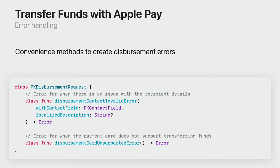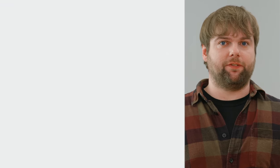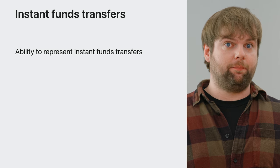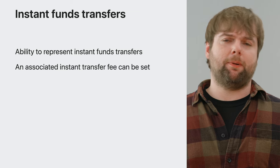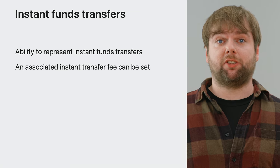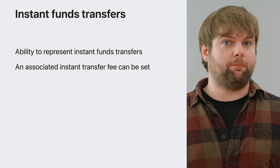If during the processing stage there are errors encountered, we have provided a set of convenience methods to represent these. You can use DisbursementContactInvalidError for when there are issues relating to the contact information provided. If your payment processor determines that the user's payment card is unable to accept fund transfers, you can use DisbursementCardUnsupportedError. Some financial institutions support instant funds transfers, where funds can be sent to the recipient more quickly, and these can also be represented with transfer funds with Apple Pay. Depending on the service, these instant transfers can sometimes include fees, which can also be represented.